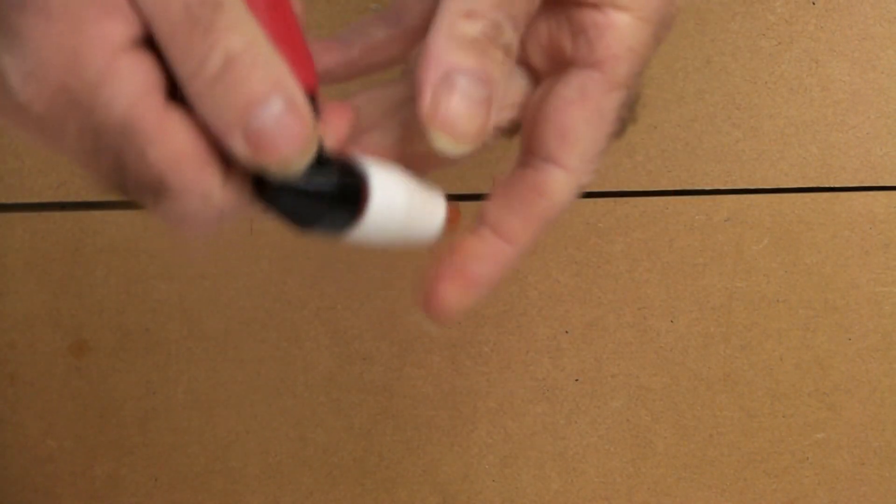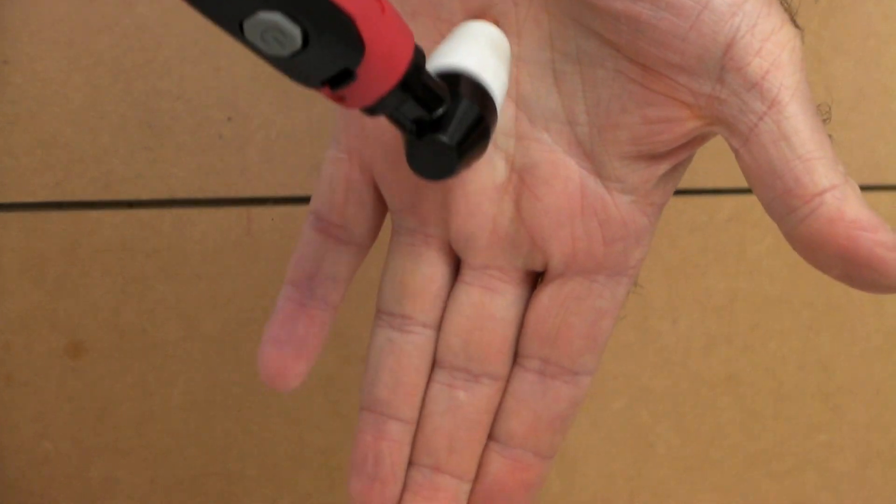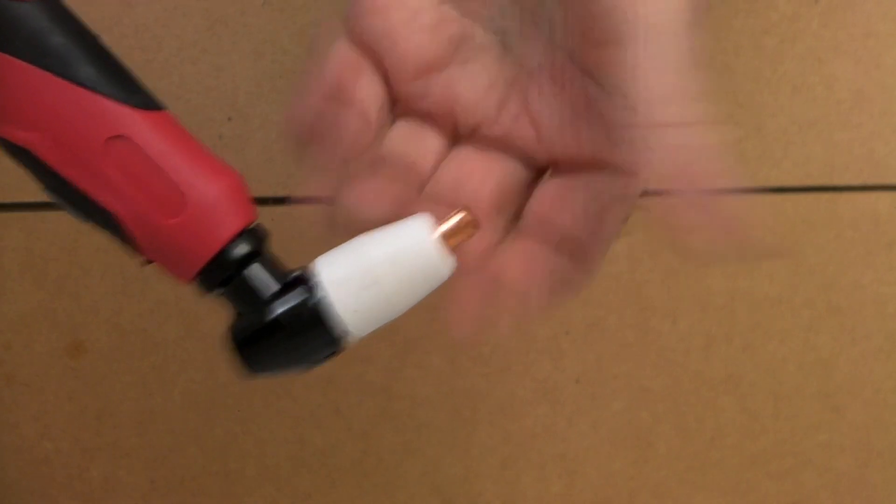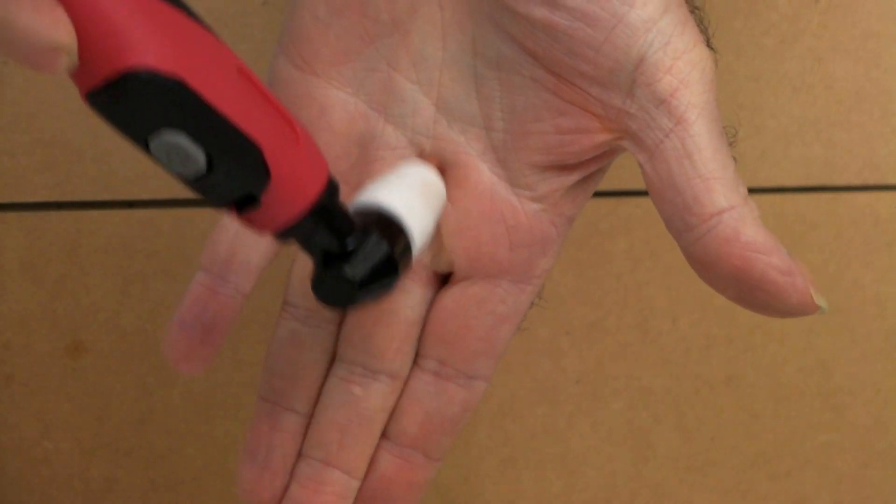When you drag it along whatever you're cutting, your tip makes earth contact with the steel you're cutting, and it has to make contact with the steel for it to work.